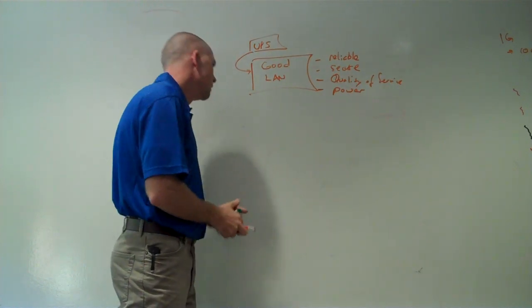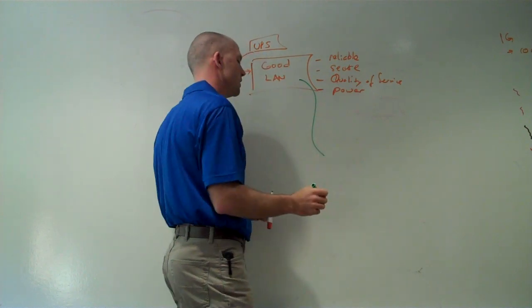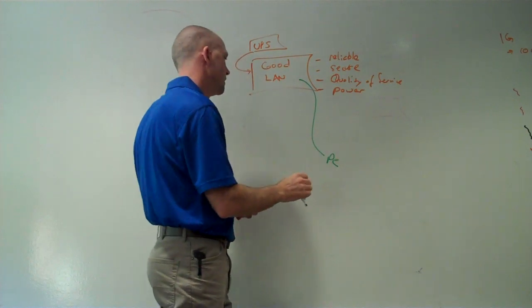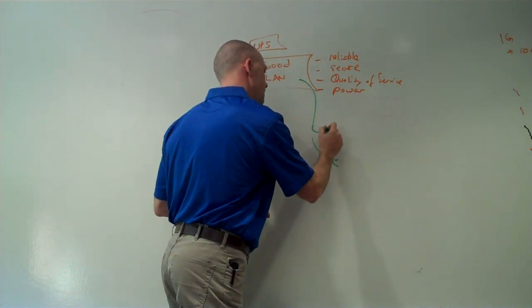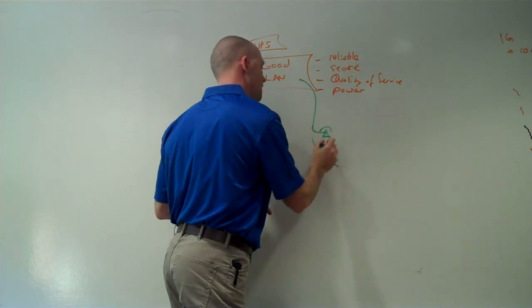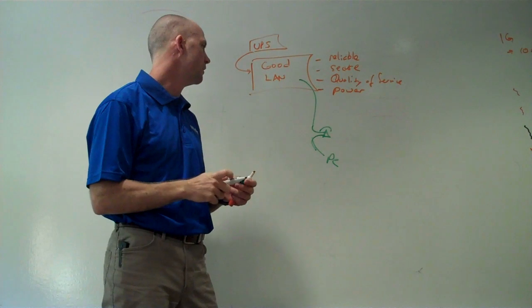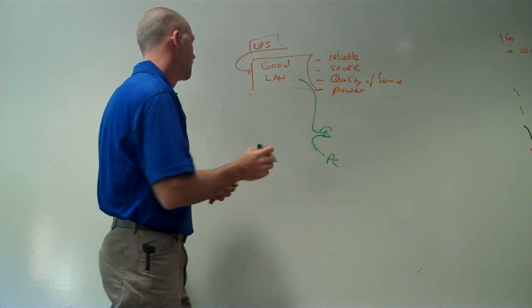The second element, we're going to have handsets. So you already have wiring going out to your desk where you have a computer. So what we do is we just take a handset and connect it in to the same ethernet cable and then connect the PC into the back of it. So we don't have to pull any extra cable.